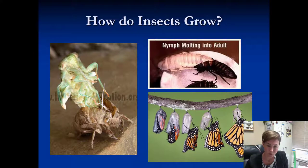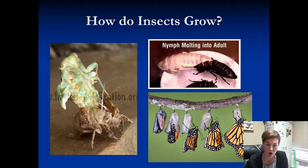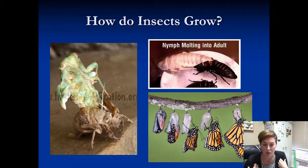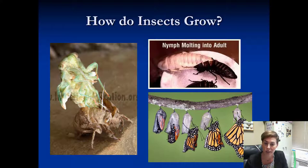We know from previous lessons that insects are covered with an exoskeleton — they have a hard shell that covers their body, whereas we're covered in skin. When our muscles and bones grow, our skin stretches with that. Insects can't do that. They grow from the inside, just like we do, but their skin is essentially their skeleton on the outside. It's hard, it's constricting, and it keeps them at a certain size.